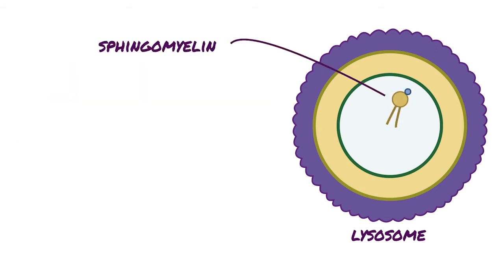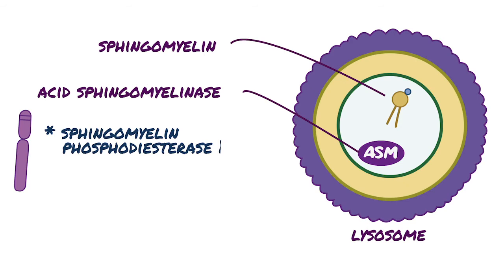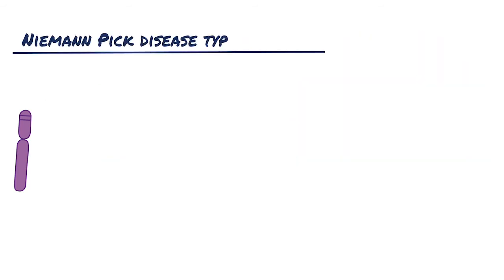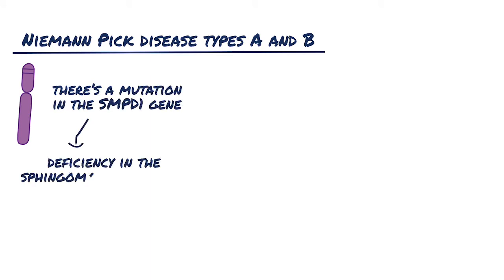Lysosomes break down sphingomyelin using an enzyme called acid sphingomyelinase, which is a product of the sphingomyelin phosphodiesterase 1 or SMPD1 gene. In Niemann-Pick disease types A and B, there is a mutation in the SMPD1 gene that causes deficiency in the sphingomyelinase enzyme.